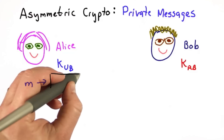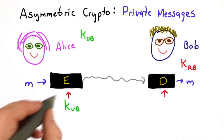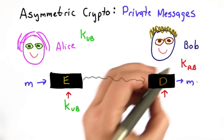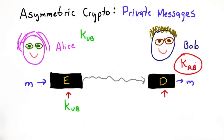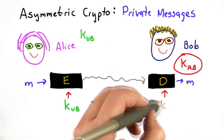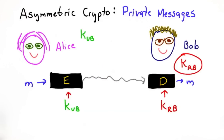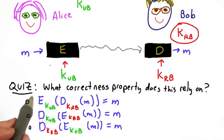Alice can send a message to Bob, encrypting it with Bob's public key, knowing that the only one who can decrypt it is someone who knows Bob's private key, which should be only known to Bob. Bob decrypts the message using his private key. So now we'll have a quiz to see that everyone is understanding asymmetric cryptosystems.